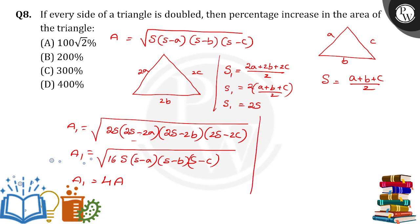What is the percentage increase? First we have to find change in area. Change in area is equal to A dash minus A, that equals 4A minus A, we will get 3A.